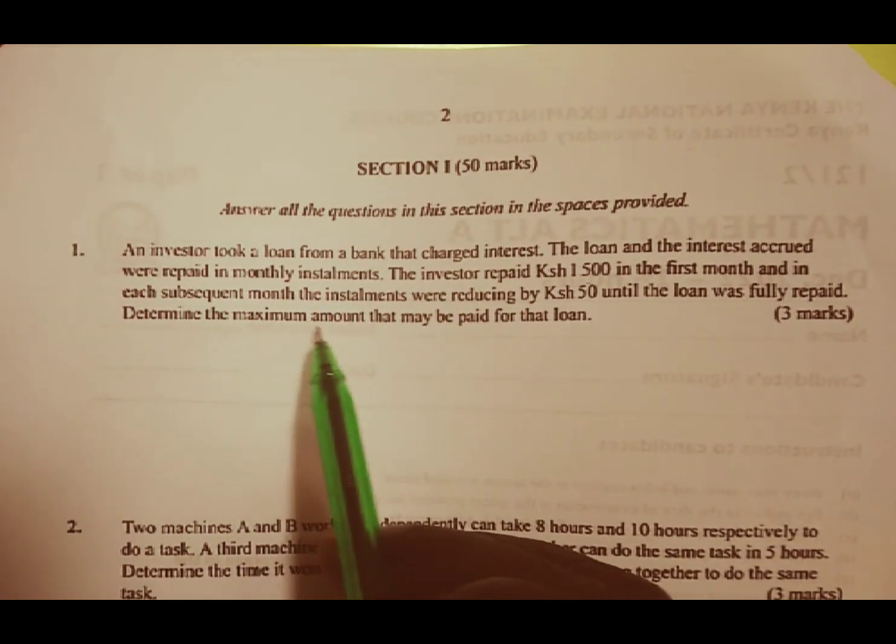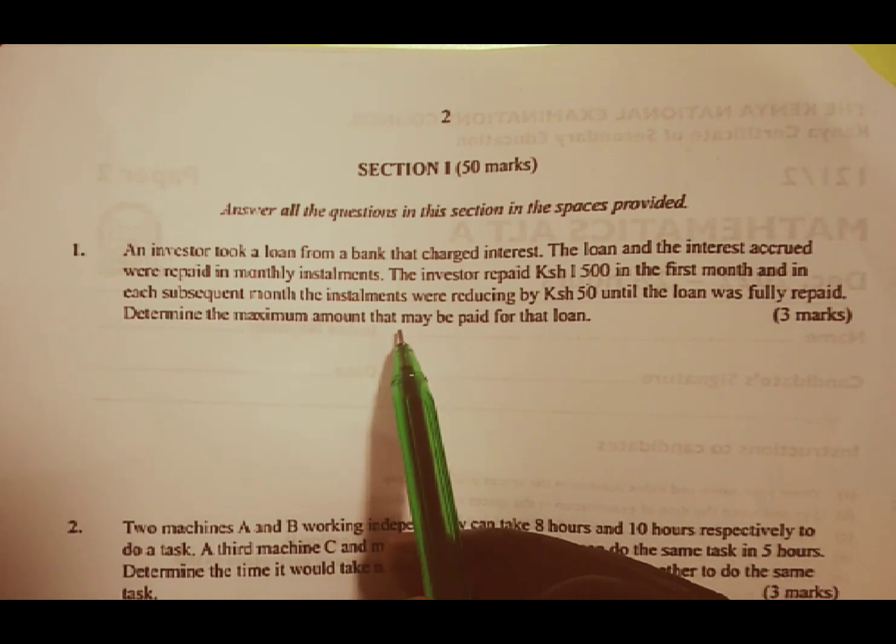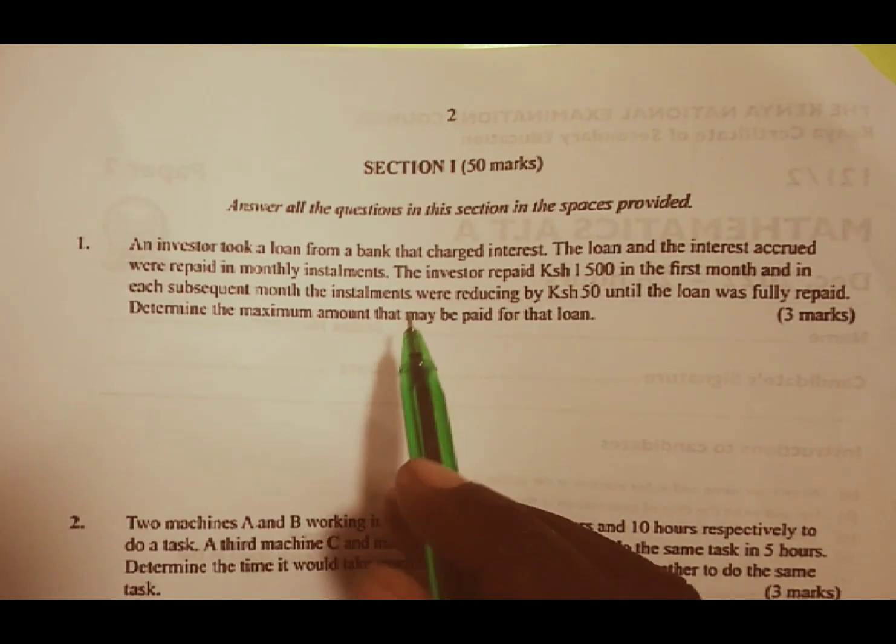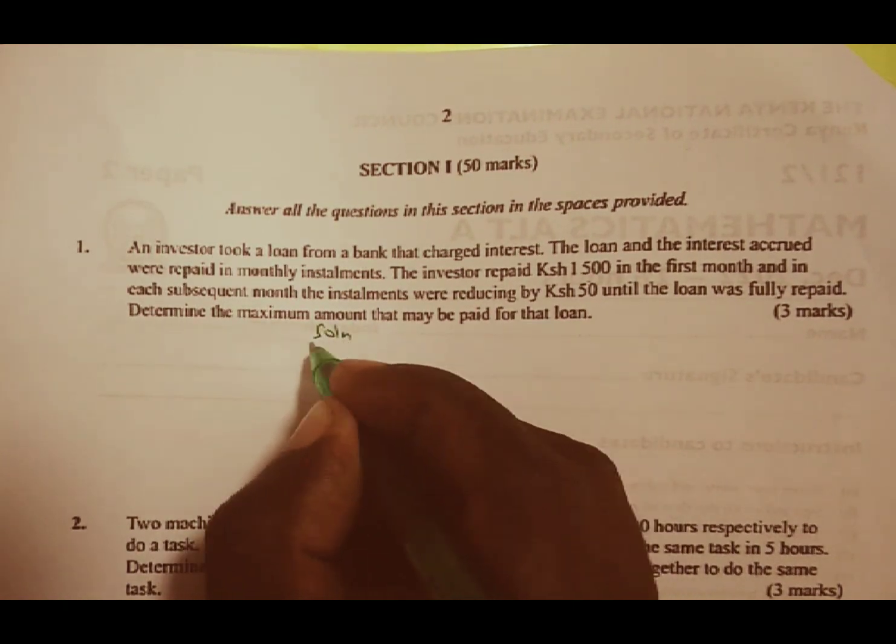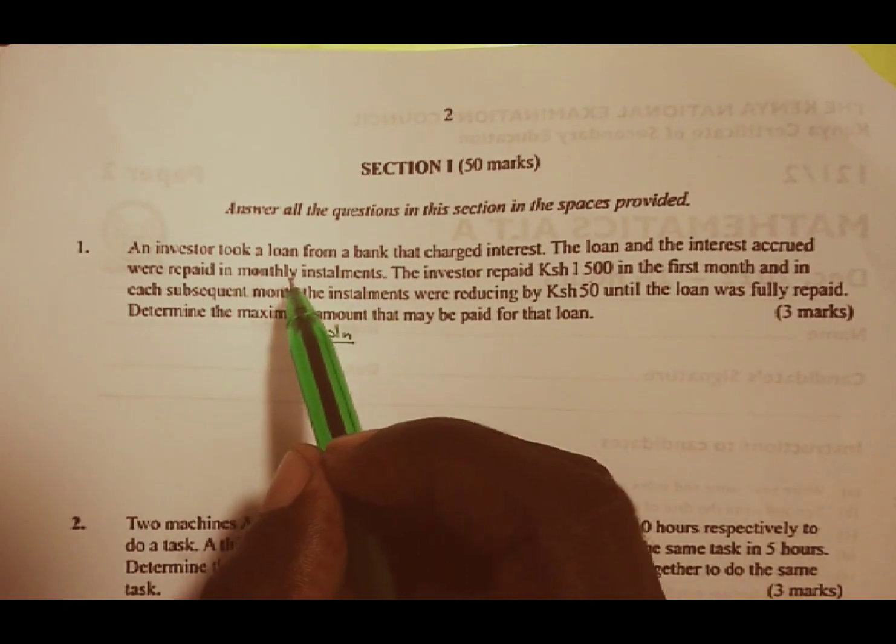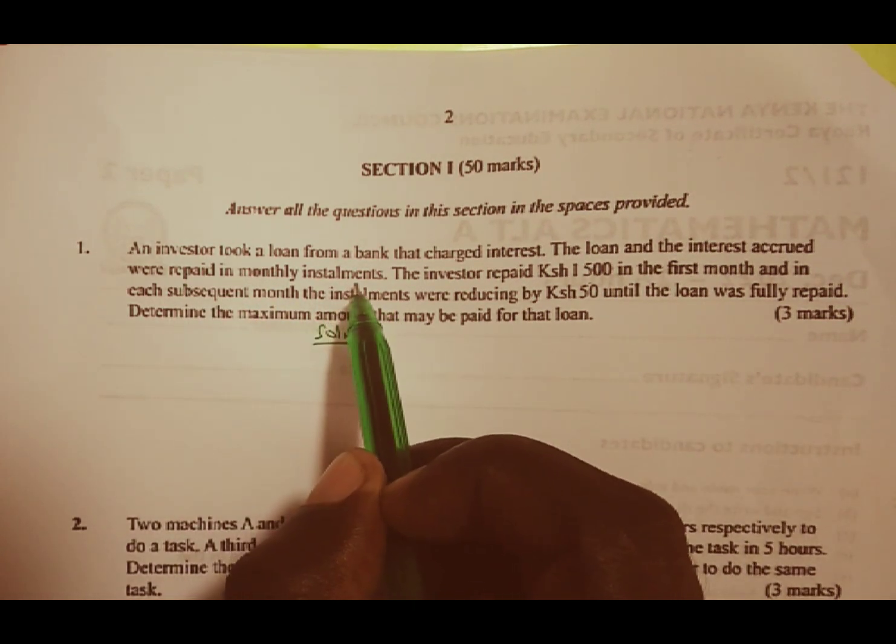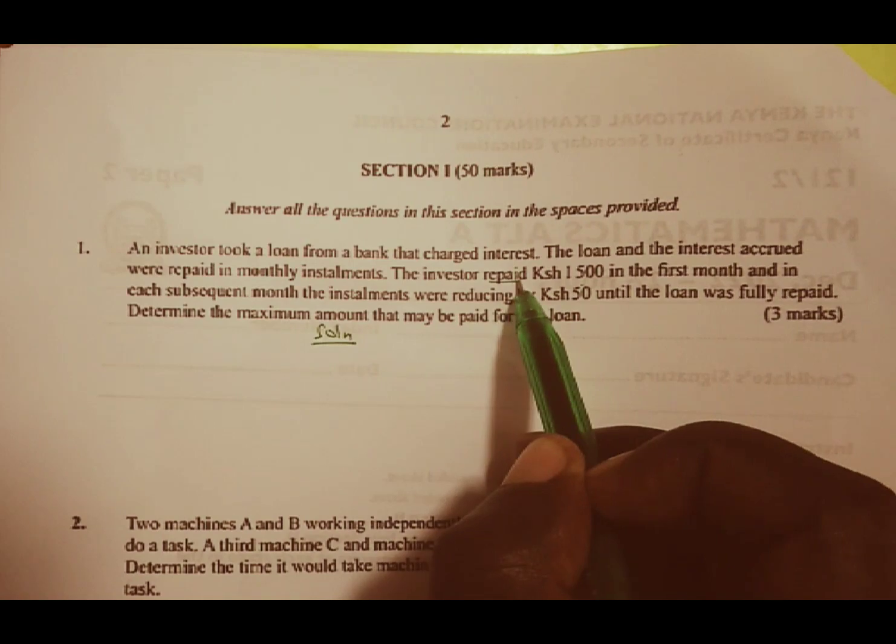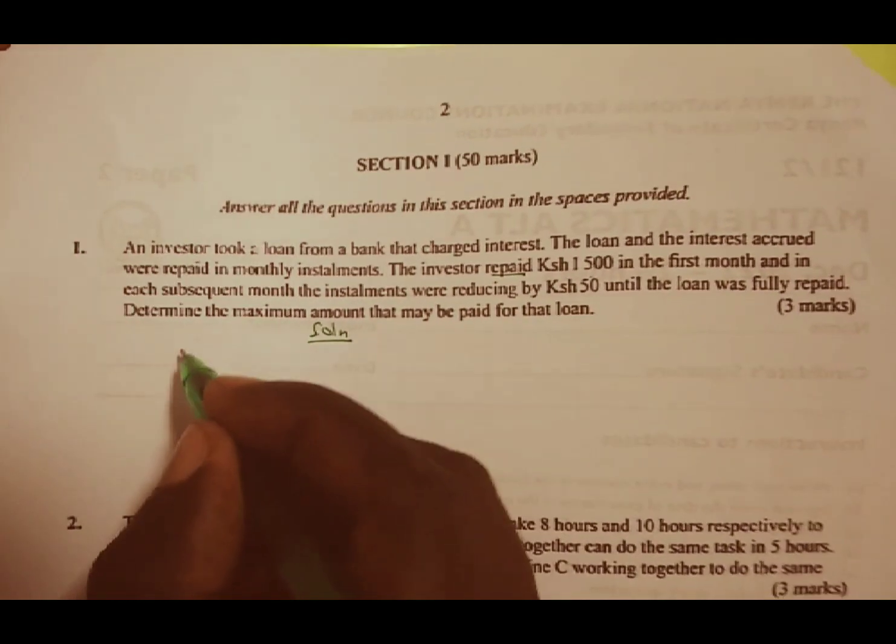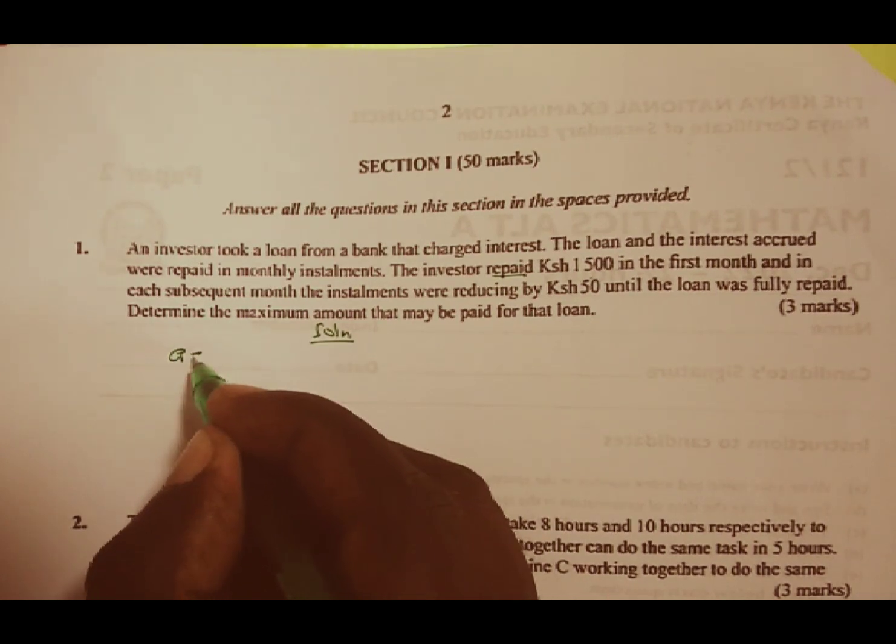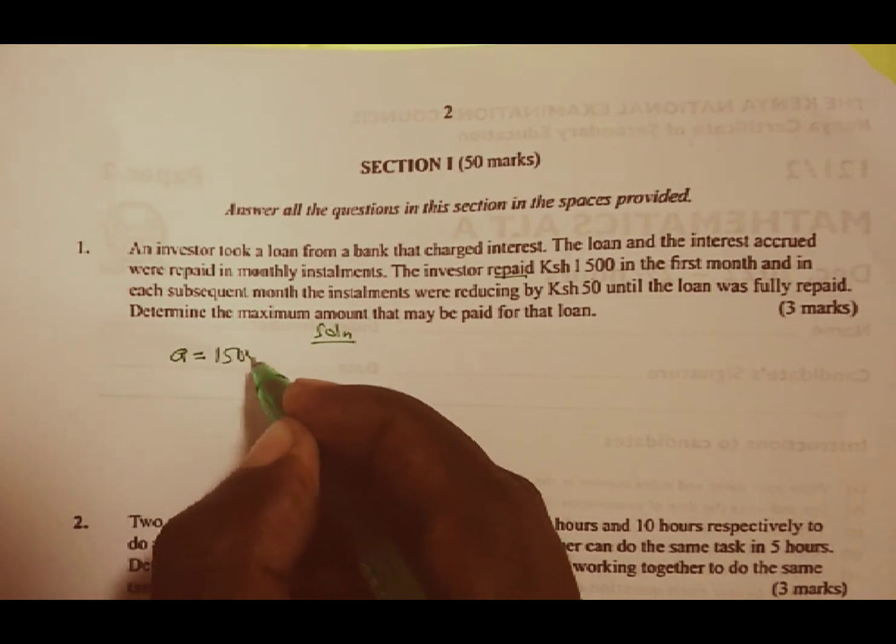Determine the maximum amount that may be paid for that particular loan. So let us look at the solution to this question. We are told the loan and interest were repaid in monthly installments, and the investor repaid Ksh 1,500 in the first month. This forms our first term of 1,500.